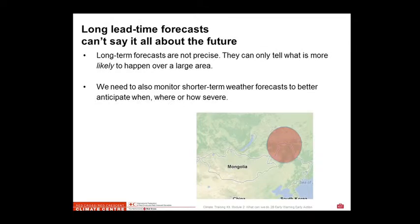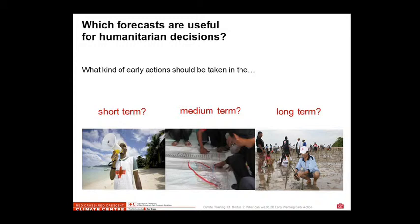Long lead time forecasts cannot say it all. The long-term forecasts are not precise. They can tell you what is more likely to happen over a large area, not over one district. We need to monitor shorter-term weather forecasts to anticipate when, what, and how severe the manifestations of extreme events can be. Now, what of everything being said by scientists can be useful for humanitarian decisions?